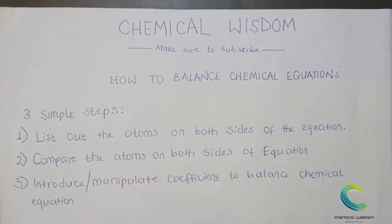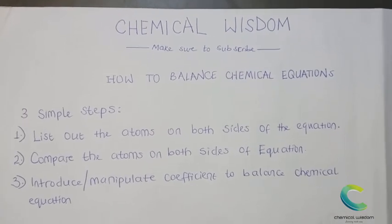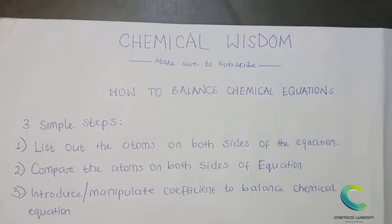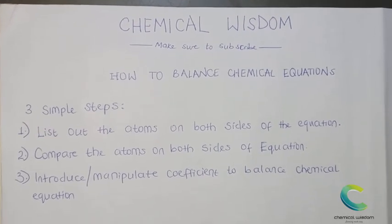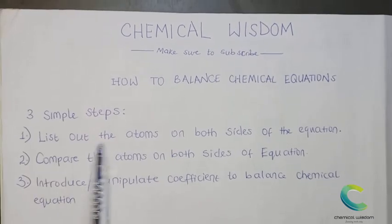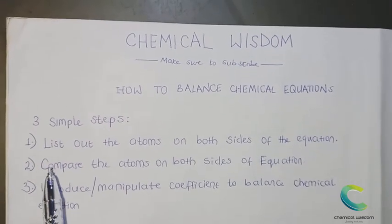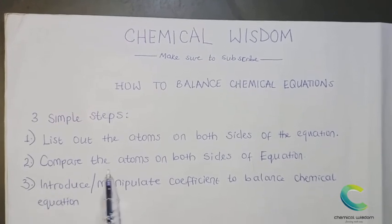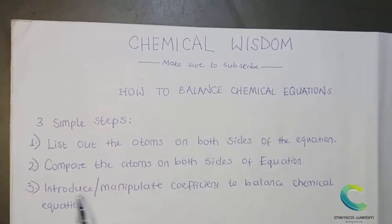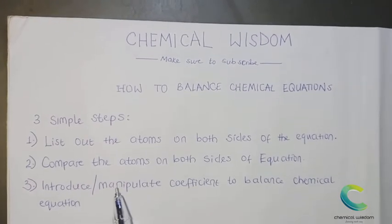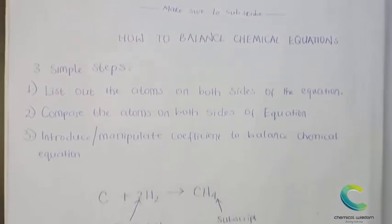Welcome to Chemical Wisdom. Today we are going to be dealing with how to balance chemical equations. In this video, I'll be taking you through three major steps to balance any chemical equation. Step one: list the atoms on both sides of the equation. Step two: compare the atoms on both sides. Step three: introduce and manipulate coefficients to balance chemical equations.